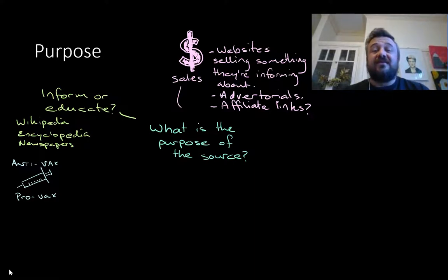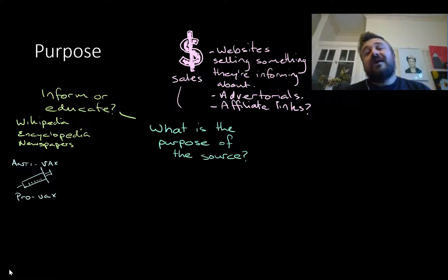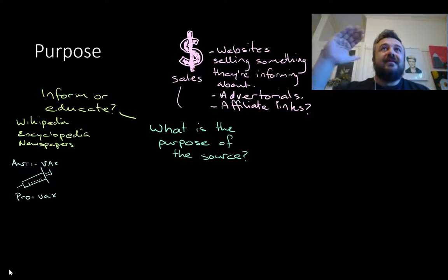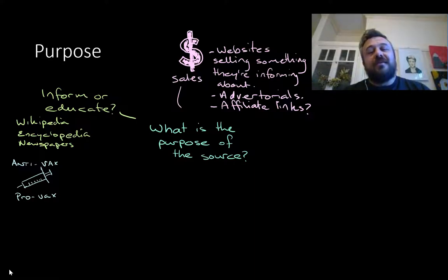Advertorials — we'll see these a lot in newspapers where it looks like an article, but it's actually sponsored by a certain company. It's an advertisement. Or affiliate links — you'll see people in blogs or other information sources reviewing equipment, ideas, or books, and saying, by the way, if you buy it from our link right here, we'll get a few dollars. That doesn't mean they're bad sources, but it's something you need to be aware of.